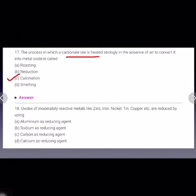So when carbonate ore is heated, the process is called calcination, and when a sulfide ore is heated, then the process is called roasting.